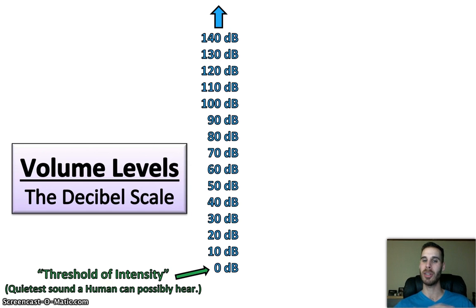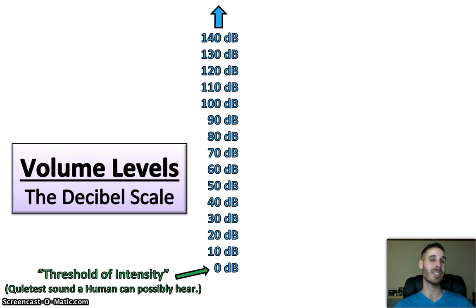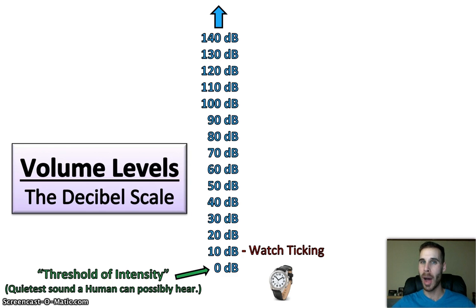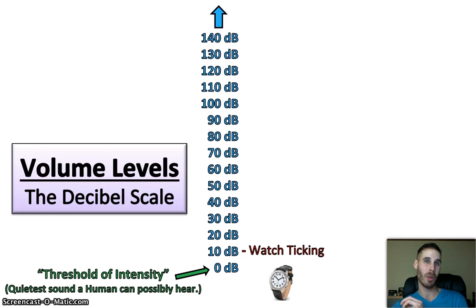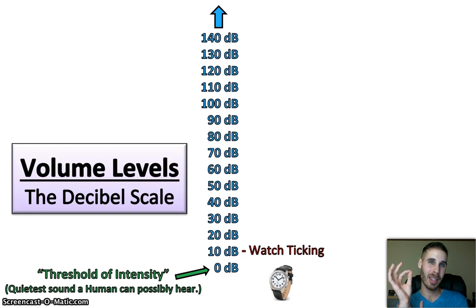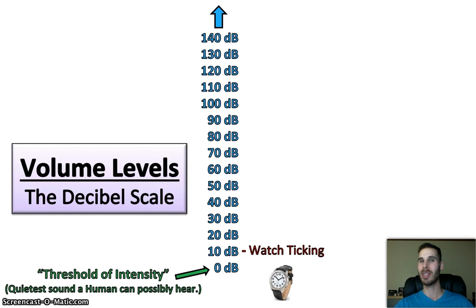We'll now look at all the other decibels, or at least most of them, and we'll try and figure out what real sounds in our life match these volume levels. 10 decibels is extremely quiet — it's the sound of a watch ticking, essentially. If you've ever been alone in a quiet room where there's no sound and you've been wearing a watch, that might be the only time you'll ever hear that watch. Or maybe you keep a watch in your room and when you're falling asleep at night, you might hear the tick, tick, tick of a watch. Watches are very, very quiet, but they do make some sound, and only when it's absolutely silent everywhere else can you hear it.